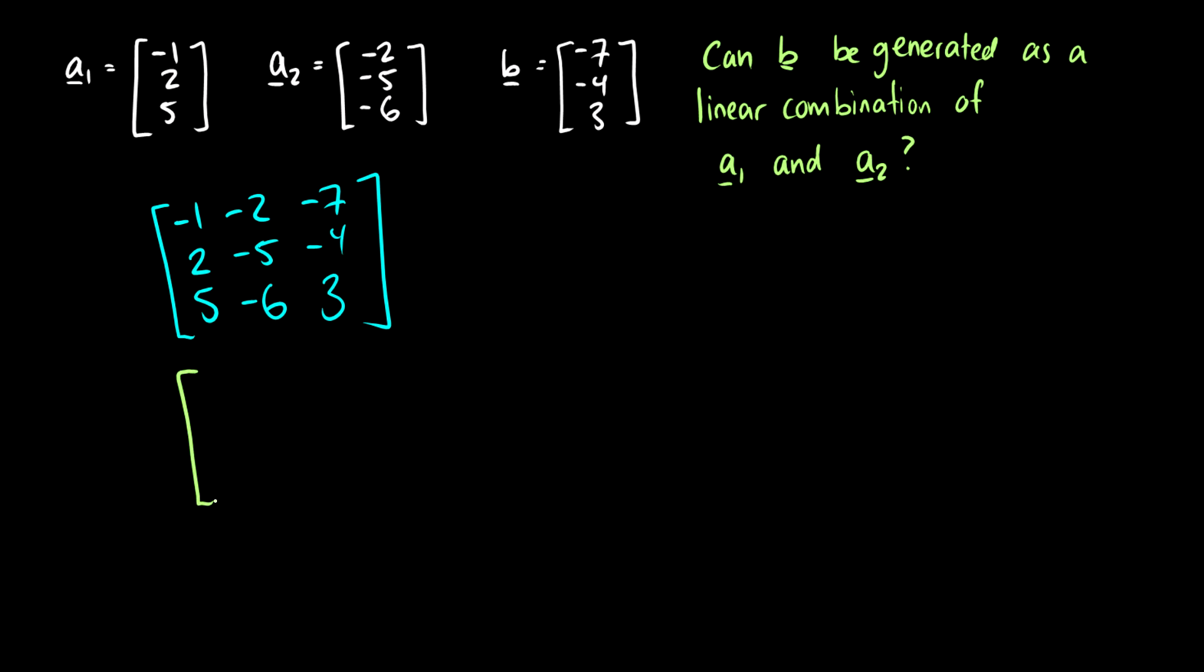So let's multiply the first row by -1 because I don't like dealing with negative numbers. They're a little bit more confusing, a little bit more prone to make mistakes. And for the second row we're going to take the second row minus 2 of the first row. So we're going to have 2 minus 2 is 0, -5 minus 4 is -9, -4 minus 14 is -18. And then we're going to take the third row minus 5 of the first row. So 5 minus 5 is 0, -6 minus -10 is 4, and 3 minus -35 is 38.